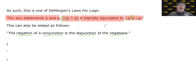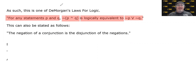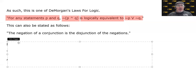You could also say that the negation of an 'and' is an 'or.' There were two DeMorgan's Laws in set theory, so are there two DeMorgan's Laws for logic?